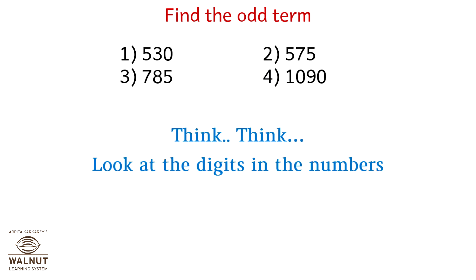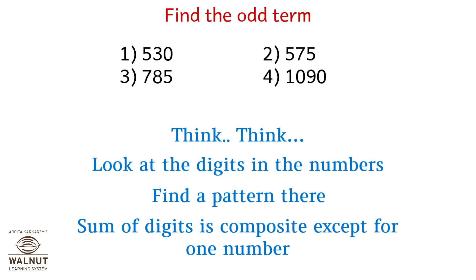Find the odd term again. Look at the digits in the numbers — the sum of the digits is composite except for one number. Option 2 is 575: 5+7+5 = 17, which is a prime number. So that's the odd term.